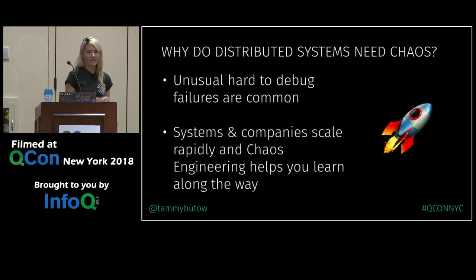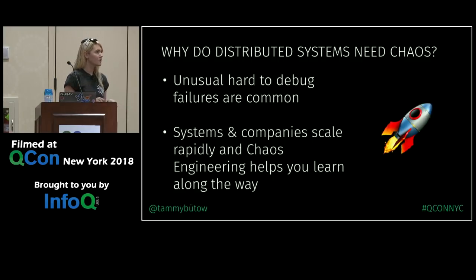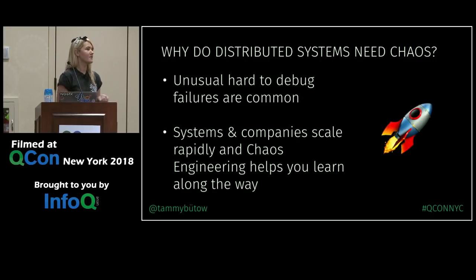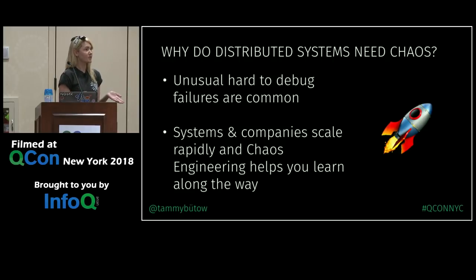Why do distributed systems need chaos in the first place? It's really hard to debug failures, especially with tons of microservices. Systems and companies are scaling rapidly - when I was at Dropbox, we went from 400 million to 500 million users in one year. That 100 million extra users changes what you need for your infrastructure - capacity planning, load, how you'll service users, where they're located.